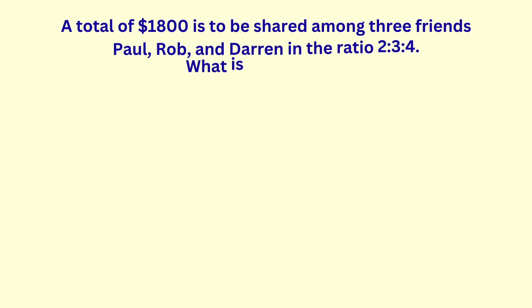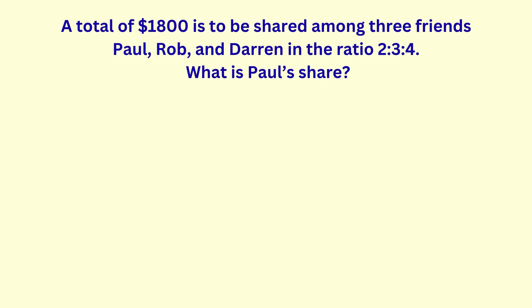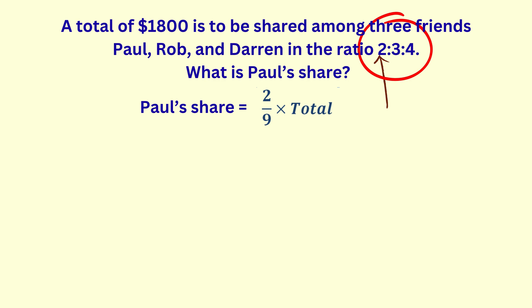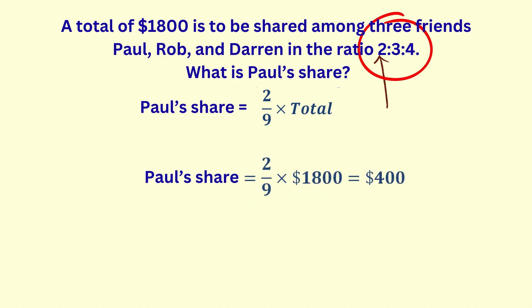Here is a problem with a three-part ratio. A total of $1,800 is to be shared among three friends — Paul, Rob, and Darren — in the ratio two to three to four. What is Paul's share? Paul's part of the ratio is two. The sum total of all three parts of the ratio is nine, so Paul's share is two-ninths of the total. Two-ninths times $1,800 is $400. So Paul's share is $400, which, by the way, is the smallest amount.